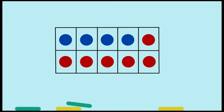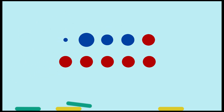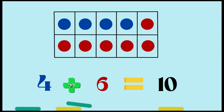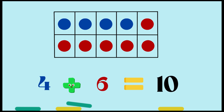Next up — there are four blue dots and six red dots. So in the tens frame, four and six make 10, or you can say four plus six equals 10. Great work everybody!